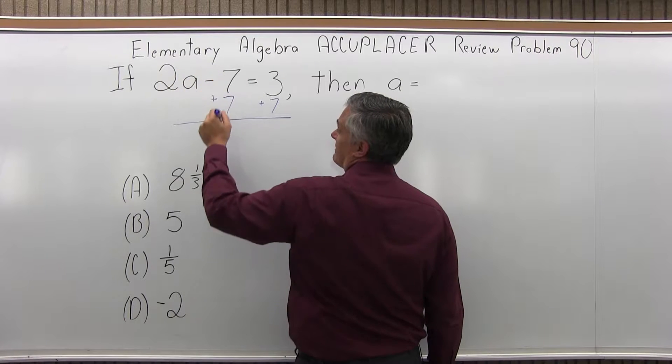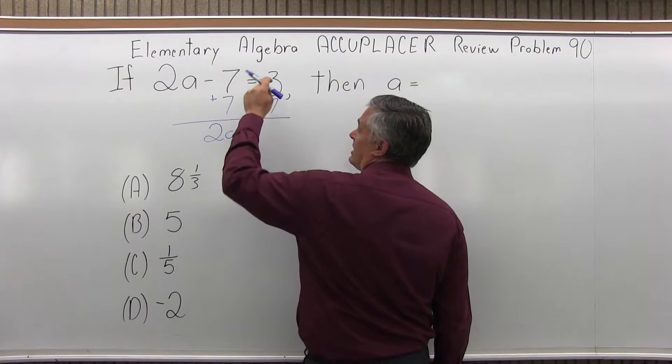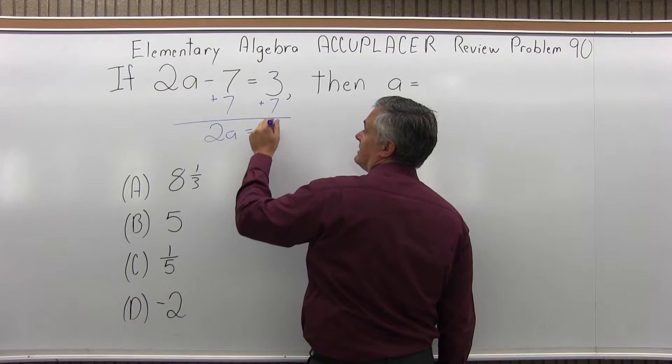So 2A minus 7 plus 7 is 2A. And on the right side, 3 plus 7 is 10.